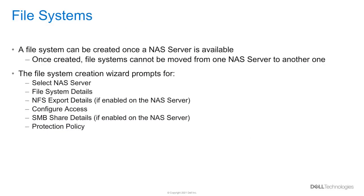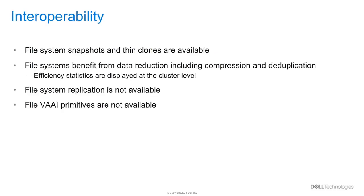Now let's talk about file systems. Once a NAS server is available, a file system can be created. Once created, it cannot be moved to another NAS server. To create a file system, we specify the NAS server, name, and size. Users can then create an NFS export or SMB share depending on which protocols were enabled at the NAS server, and can also set a protection policy. Within a file system, snapshots and thin clones can be taken, and data services including compression and deduplication are supported. Note that replication and VAAI file primitives are not supported on file systems.